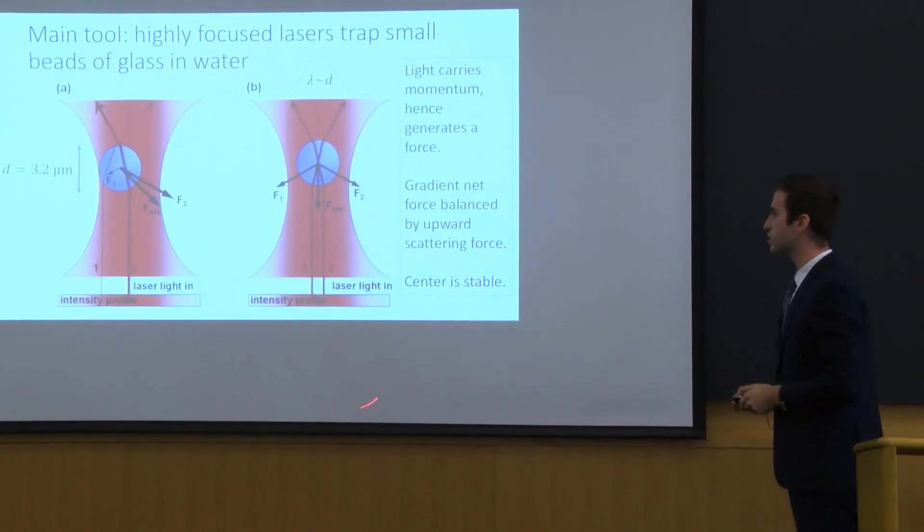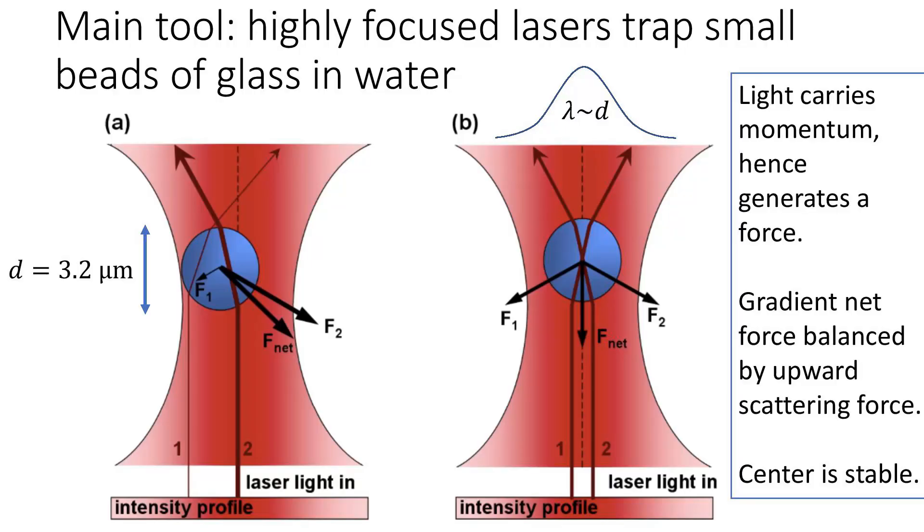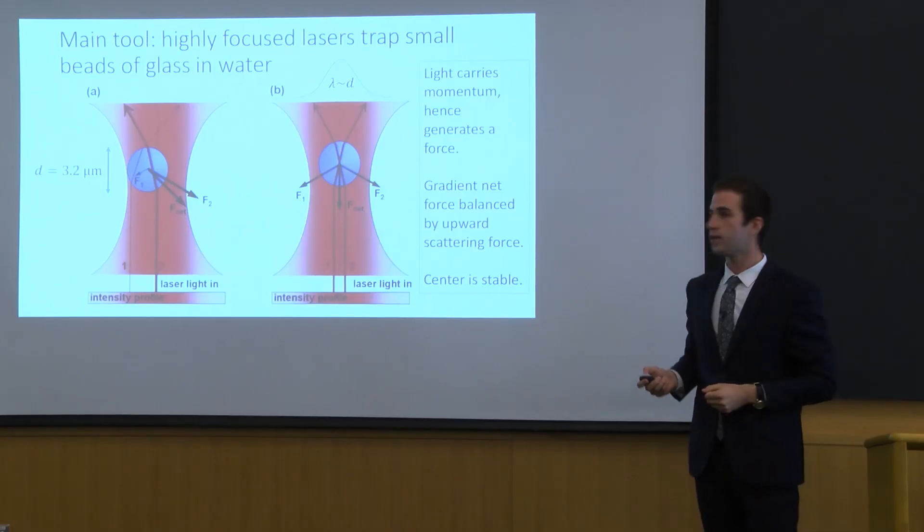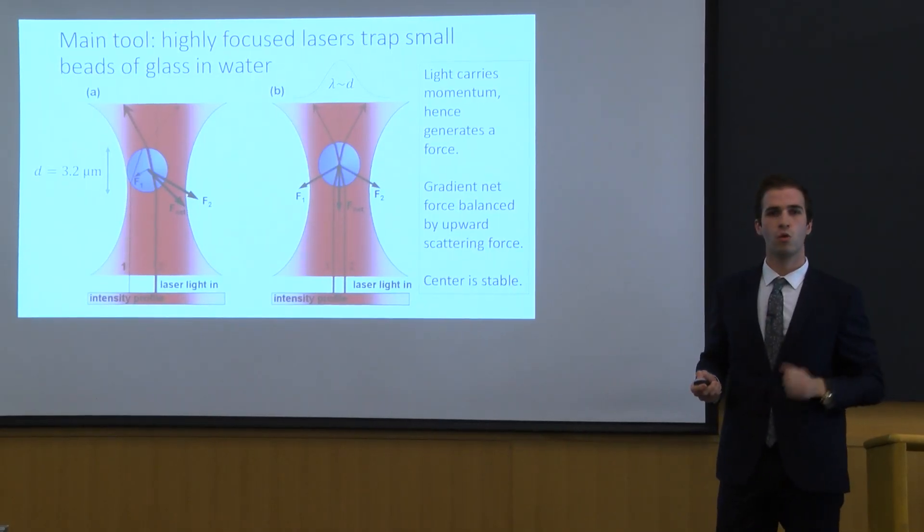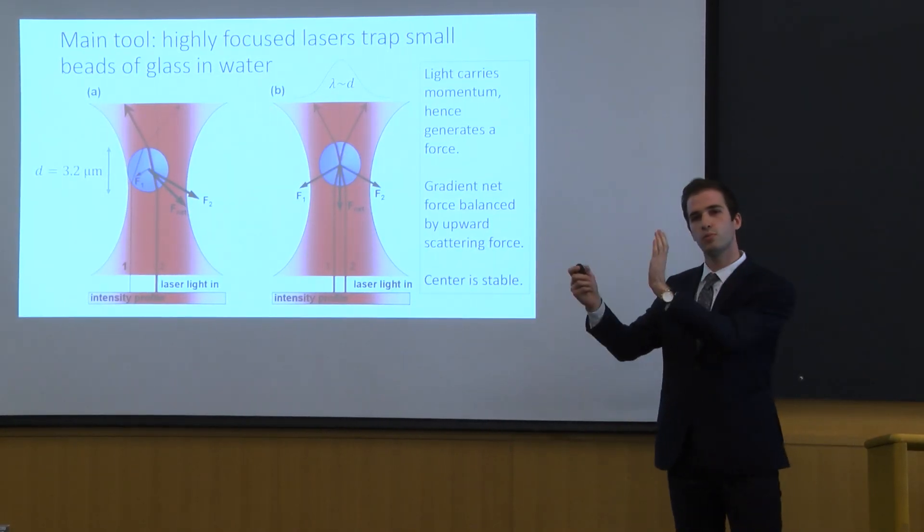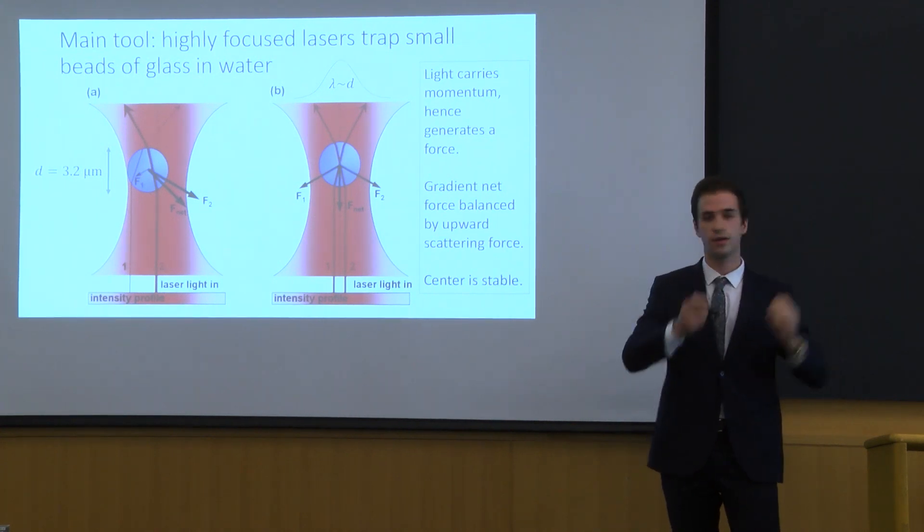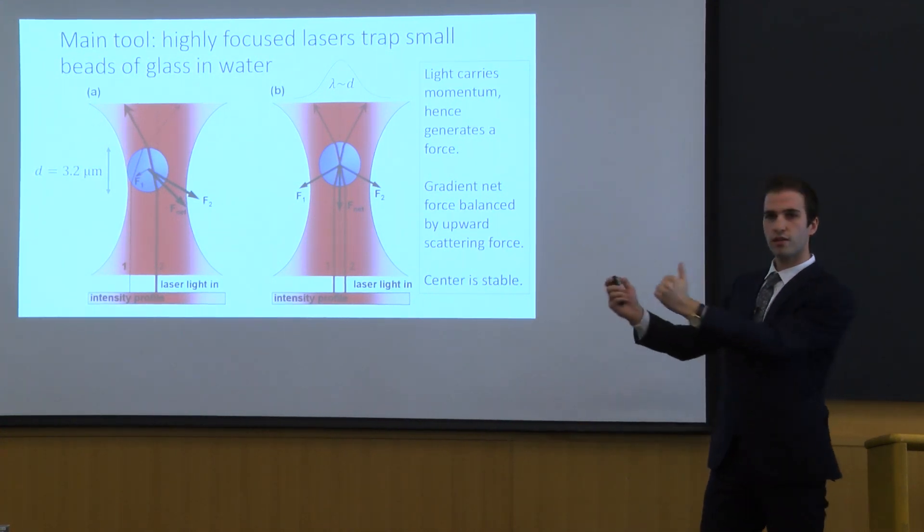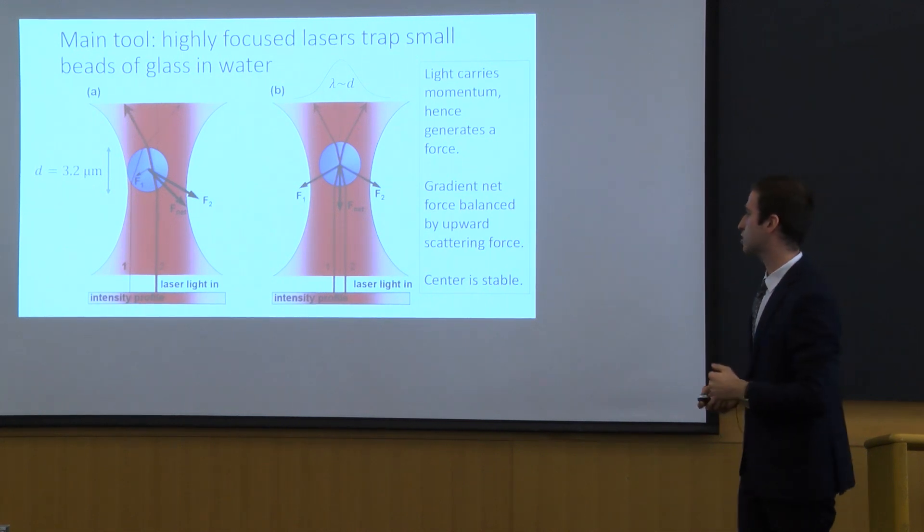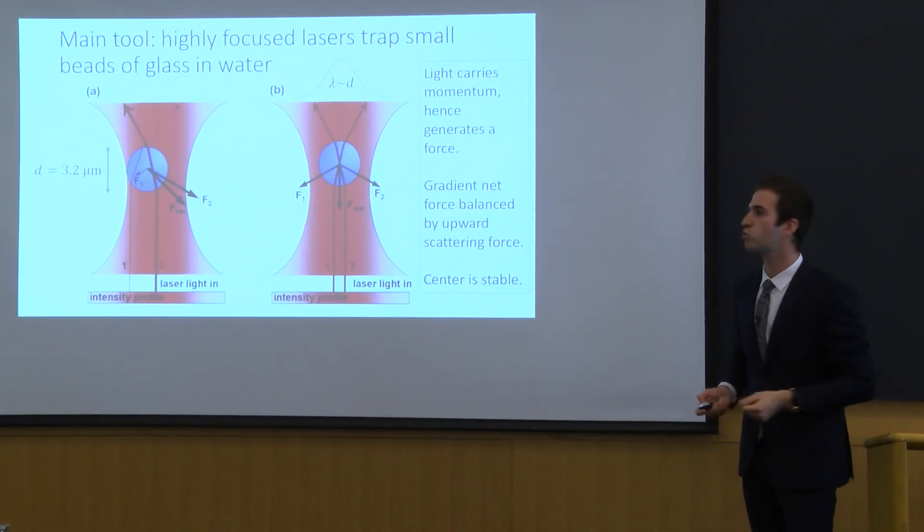And when these two forces balance each other, we have a bead that is at the center. When you push this bead a little bit to the left or to the right, then we have that the gradient forces are pulling it back to the center. And essentially we observe a simple harmonic motion.